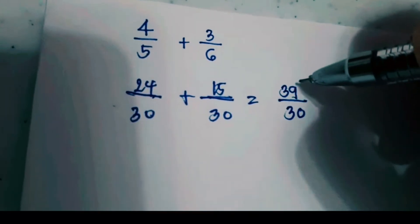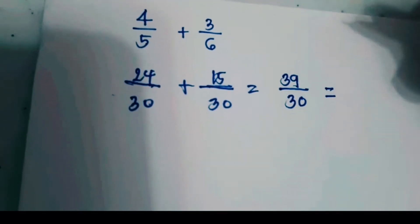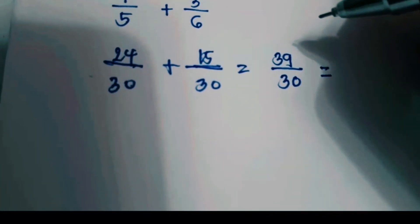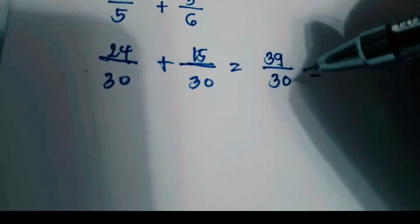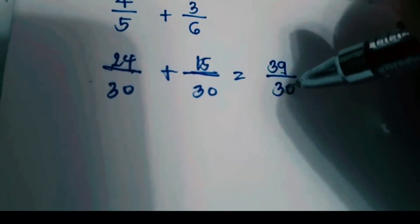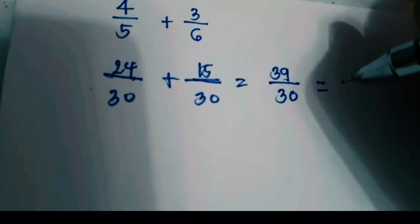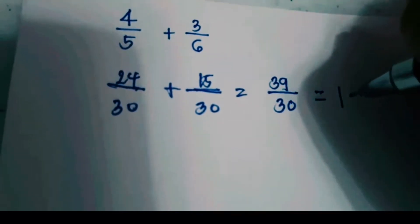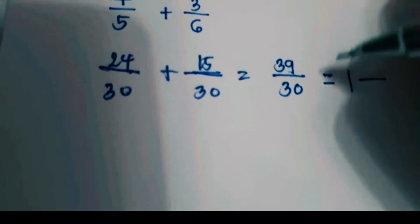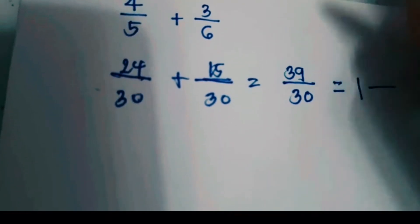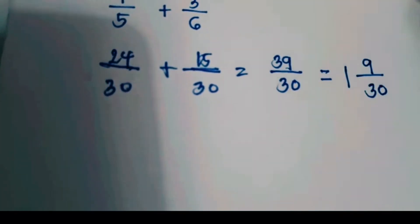Looking at your answer, you have a numerator greater than your denominator, therefore this is an improper fraction. When you get an improper fraction as your sum, you have to convert it into a mixed number. How many 30s can you get from 39? There is only one 30, so one will be your whole number. What is left from 39 after you subtract 30 will be your numerator — that is 9.